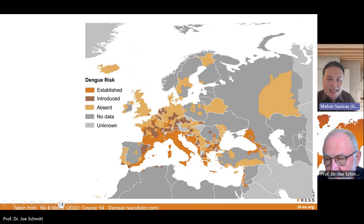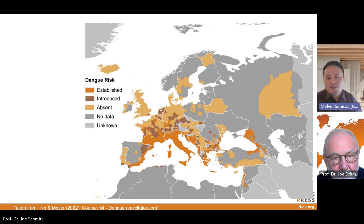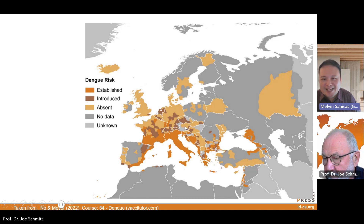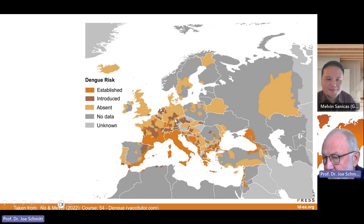We've had locally transmitted dengue cases in parts of Spain, Portugal, and Greece. But of course, the mosquitoes are spreading further north, especially with climate change. And how about the alpine regions — Switzerland and Austria? Can these mosquitoes survive the winters there? Winters are getting milder, so they can survive there — that is the issue.